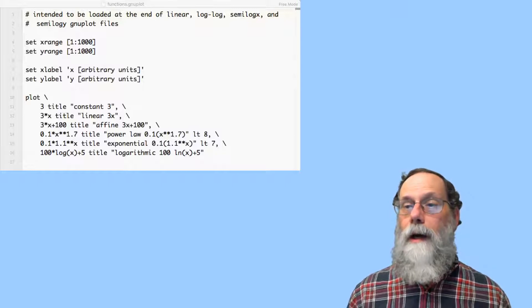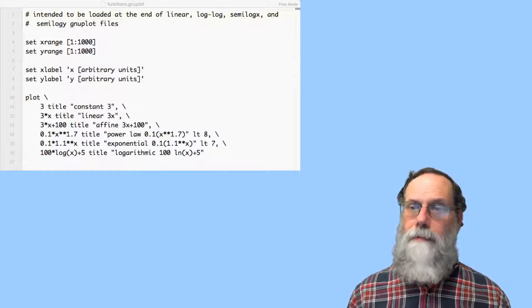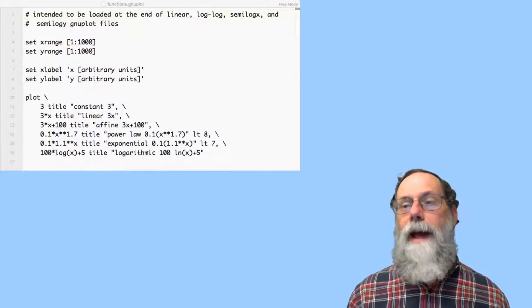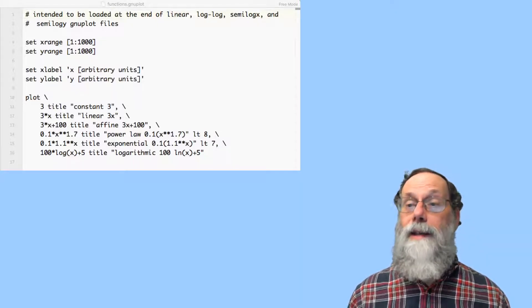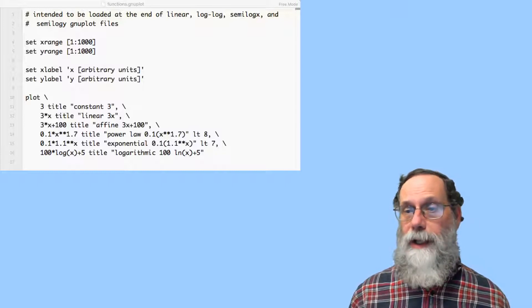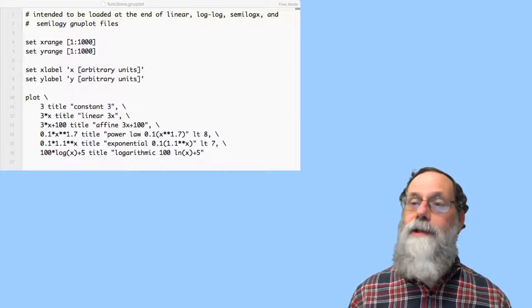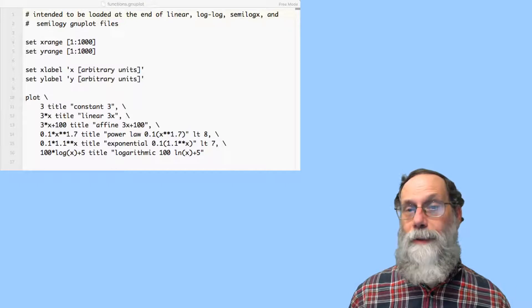And then I'm going to plot each of the functions. And the functions I've got here, one of them is a constant, constant value 3. And that's going to be a very simple thing to plot in any sort of plot. It's always going to come out as a nice horizontal straight line. Constant functions look the same pretty much however you plot them.